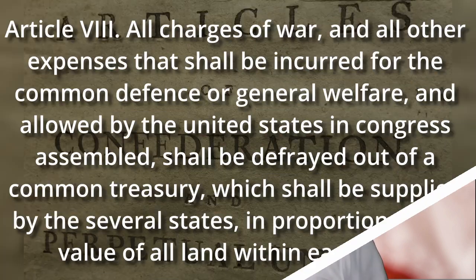Probably the most well-known issue was that the federal government under the Articles of Confederation could levy taxes against the states but had no mechanism to force them to pay. Article 8 states: 'All charges of war and other expenses incurred for the common defense or general welfare, allowed by the United States in Congress assembled, shall be defrayed out of a common treasury, which shall be supplied by the several states in proportion to the value of all land within each state.' There was no mechanism to make sure the states supplied their part.